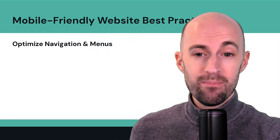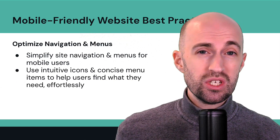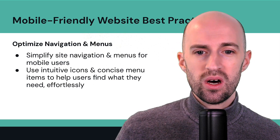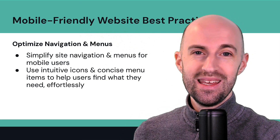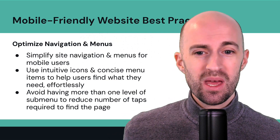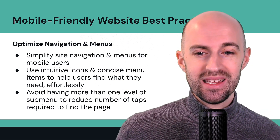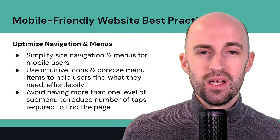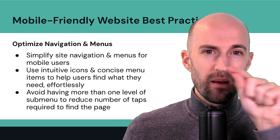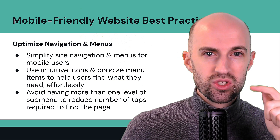Optimize navigation and menus. Simplify the site navigation and menus for mobile users. You can use intuitive icons and concise menu items — shorten them if they're too long. This helps users find what they need effortlessly. Avoid having more than one level of sub-menu on mobile devices, which reduces the number of taps needed to find the page they're looking for. Often the mobile menu is in the top right corner with three little bars and a menu comes down when you tap it.